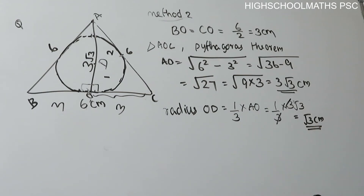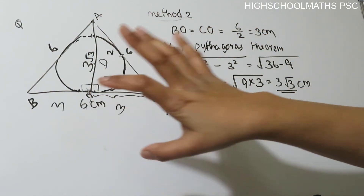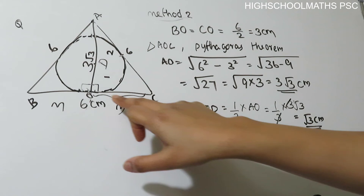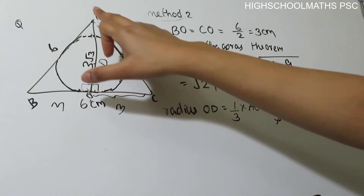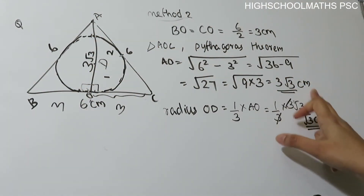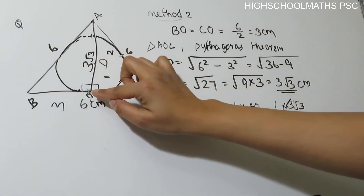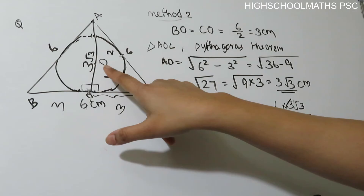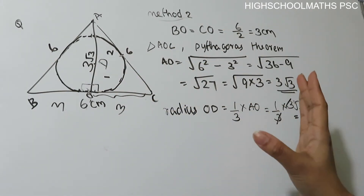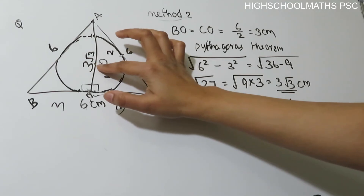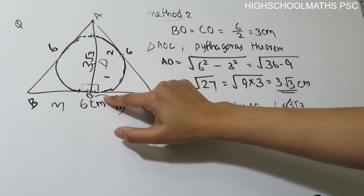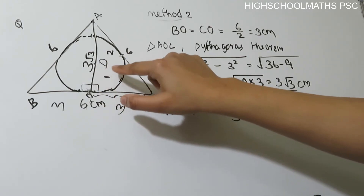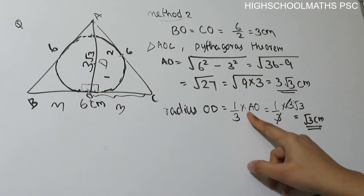We will call this 1 by 3 of the median. The median is 3√3, so 1 by 3 of 3√3 is √3. We will use this equation. The incircle radius is 1 by 3 of the median length, which equals √3 cm.